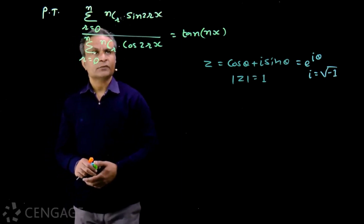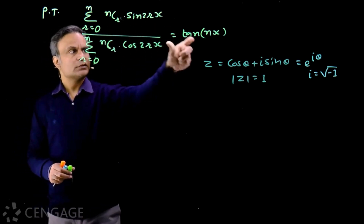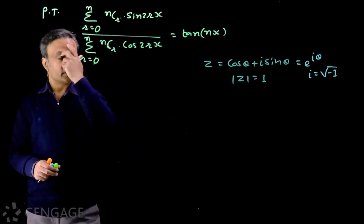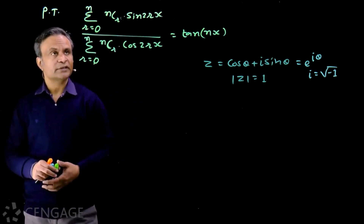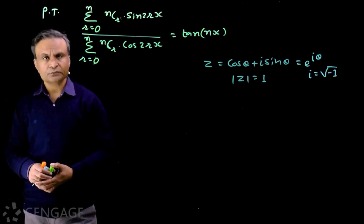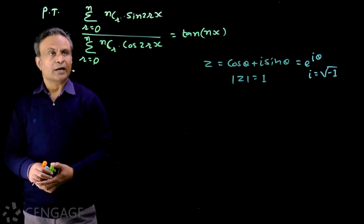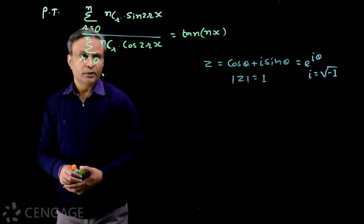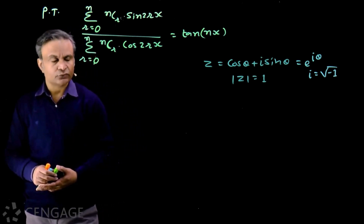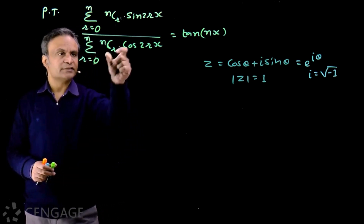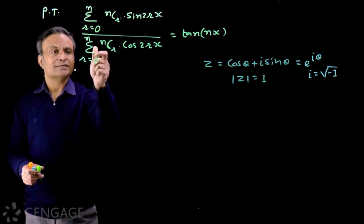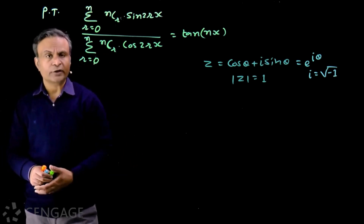Look at this question. We have to prove that a certain ratio equals tan(nx). In the numerator we have the sum of the series: nCr multiplied by sin(2rx) for r = 0 to n. In the denominator we have the sum of the series whose general term is nCr multiplied by cos(2rx) for r = 0 to n.